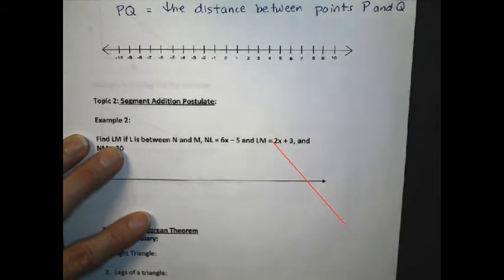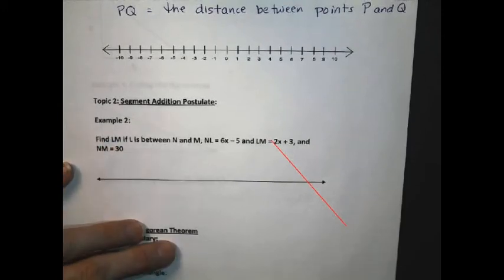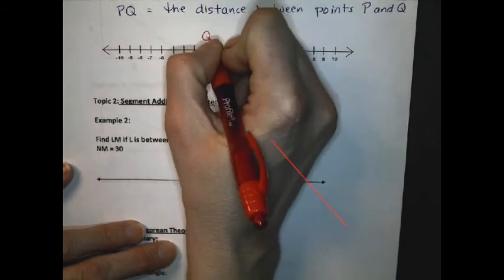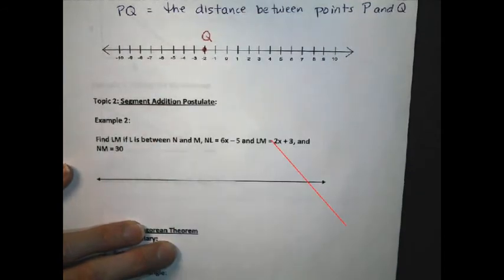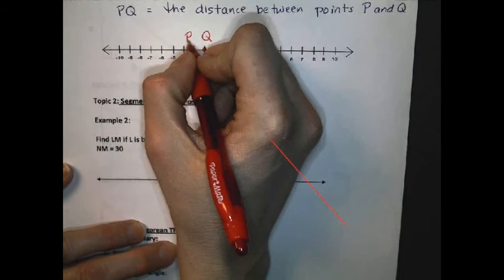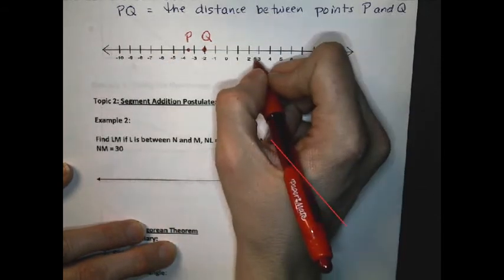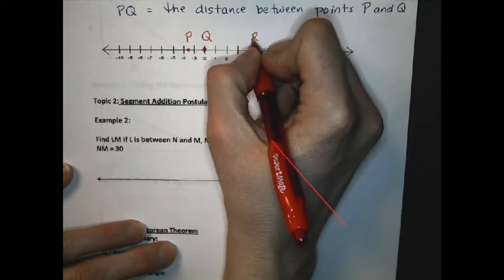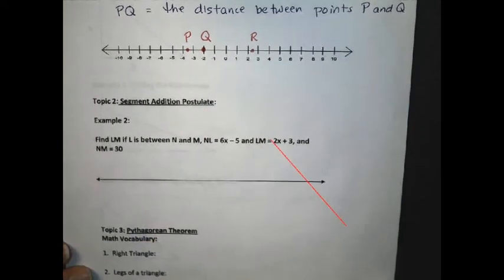For this example, I would like you to plot the points Q at negative 2, the point P at negative 3 and a half, and the point R at positive 2 and a half. So there's my three points on this number line.